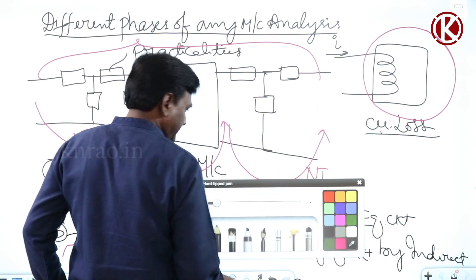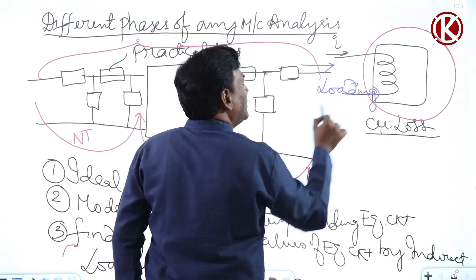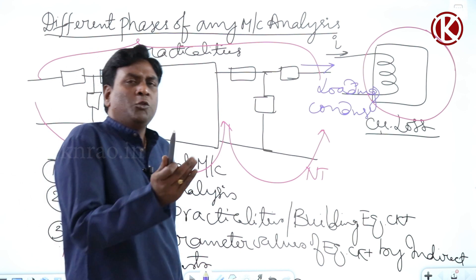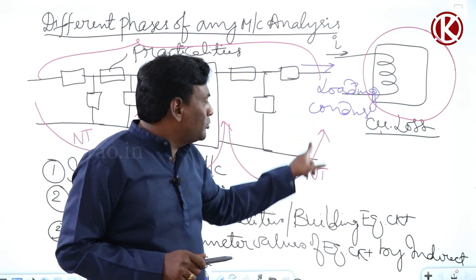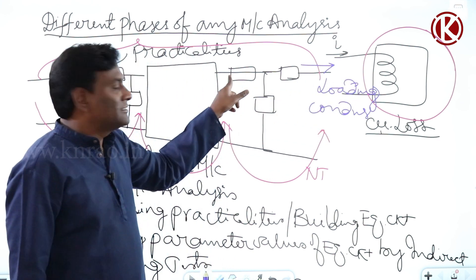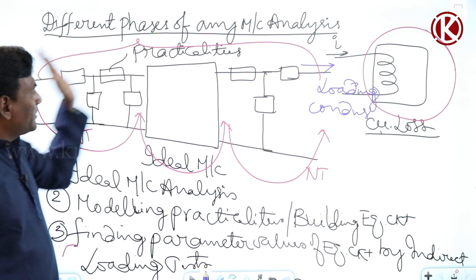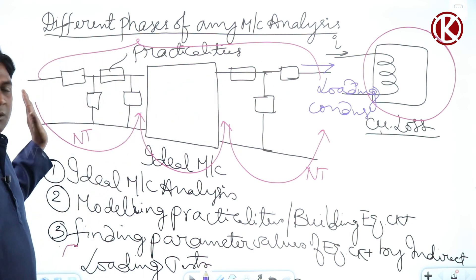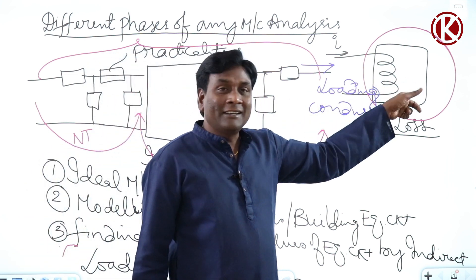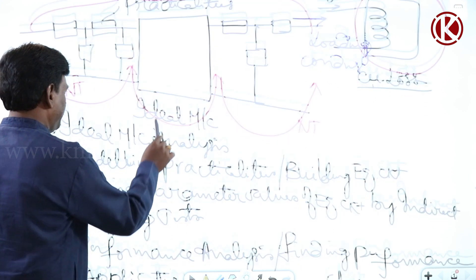For example, to find efficiency at half full load at unity power factor, I assume a load operating at those conditions. The currents become known automatically, losses become known, and from input port through the ideal machine to the output port I know the output. Output divided by input gives efficiency — and the practical transformer is never actually loaded during this calculation.